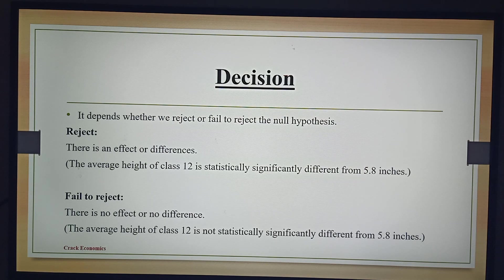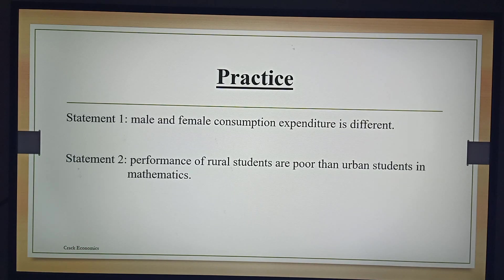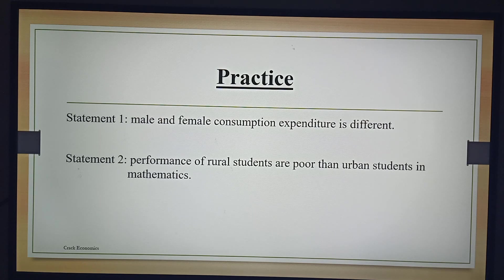So, this is how we make null and alternative hypothesis. We will do a practice. Suppose there are two statements. The first statement is: male and female consumption expenditure is different. In this case, the null hypothesis is that male and female consumption expenditure is not statistically significantly different from each other, against the alternative hypothesis that there is a significant difference between male and female consumption expenditure.